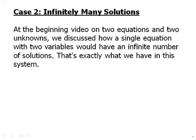At the beginning of the video on two equations and two unknowns, we discussed how a single equation with two variables would have an infinite number of solutions. That's exactly what we have in this system. Because really, we have, it looks like two equations are written on the page, but really, it is just two copies of the exact same equation. We really have only one equation. And one equation, as we know, two variables, one equation, we have an infinite number of solutions.